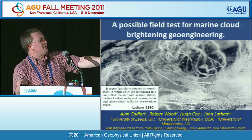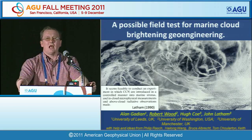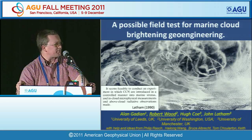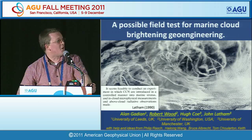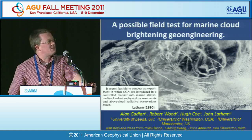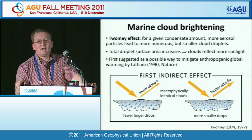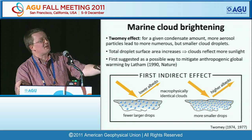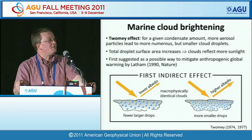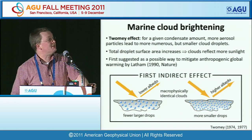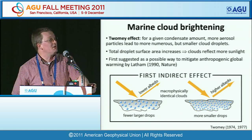This work involves Hugh Coe, Alan Gadion, and John Latham from the University of Manchester, along with Phil Rash and Chris Bretherton. This is an idea put forward in 1990 by John Latham. Essentially, you put aerosols into clouds, make the droplets smaller, and the clouds in principle become more reflective and reflect radiation back to space. If we do this by advertent modification, we can potentially offset some global warming.